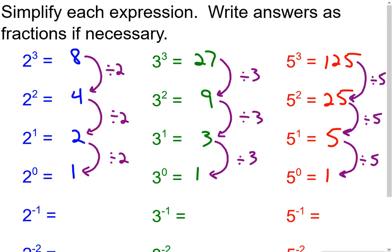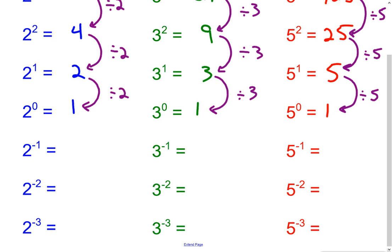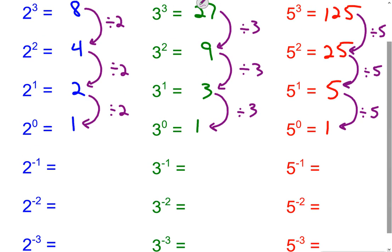So we've figured out what a number raised to the zero power is — it appears to be 1. Now continuing on: what's 2 to the negative 1? That's a negative exponent, something we've never seen before. Well, look at the pattern. Each time the exponent drops by 1, we divide by 2 again. So from 2⁰ to 2⁻¹, we divide by 2. 1 divided by 2 is one half, in fraction format.